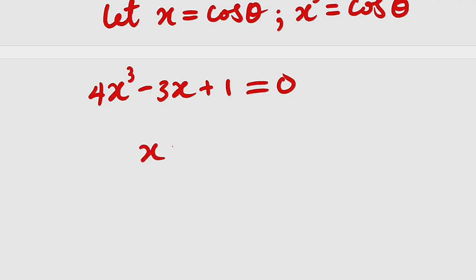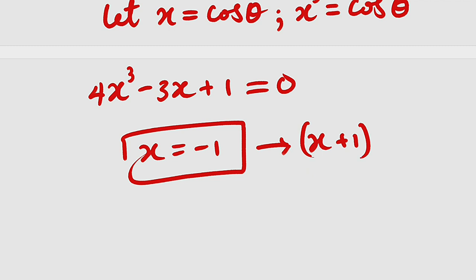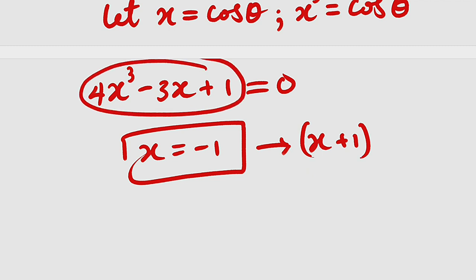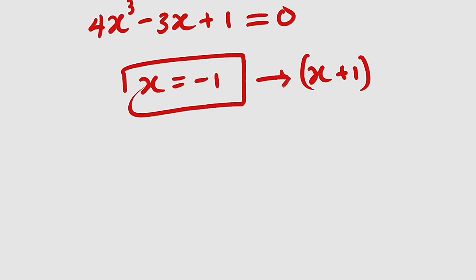Since x equals negative 1 is a root, x plus 1 is a factor. We can divide 4x cubed minus 3x plus 1 by x plus 1 to obtain the other factor. Let's carry out long division.